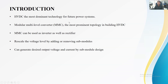The MMC is the most prominent topology in the HVDC system because of its large feature set, like low THD, high efficiency, and low modulation index. Moreover, it can be used as an inverter as well as a rectifier, converting DC into AC and AC into DC. In order to get the desired output waveform, we can increase or decrease the level by adding or removing submodules in the modular multilevel converter.